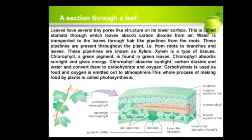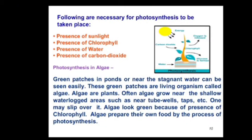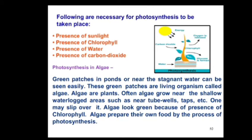The raw materials necessary for photosynthesis are: presence of sunlight, presence of chlorophyll, presence of water, and presence of carbon dioxide. Water is taken from the soil; carbon dioxide is taken from the air through stomata; chlorophyll is present in the leaves and is responsible for their green color; and sunlight is obtained from the sun.